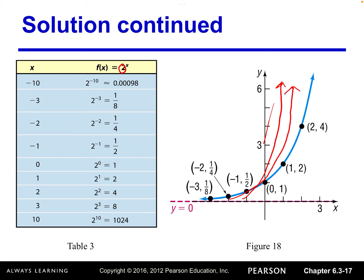As x approaches negative infinity, y approaches 0. As x approaches positive infinity, y approaches positive infinity. So the domain is all real numbers, the range is the set of positive numbers, there is no x-intercept, the y-intercept is (0, 1), and the exponential function is always increasing — it's monotone with no decreasing part, so there is no local minimum and no local maximum.